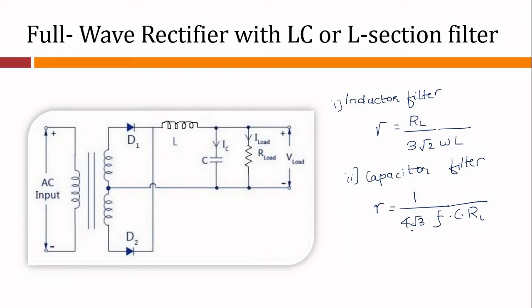Looking at these two equations: in an inductor filter, the ripple factor increases with increase in load resistance — if we increase RL, the ripple value increases. In a capacitor filter, it varies inversely with load resistance because RL is inversely proportional to the ripple factor. From an economical point of view, neither series inductor nor shunt capacitor filter alone is suitable. So practical filter circuits are derived by combining the voltage stabilizing action of the capacitor with the current smoothing action of the series choke coil.